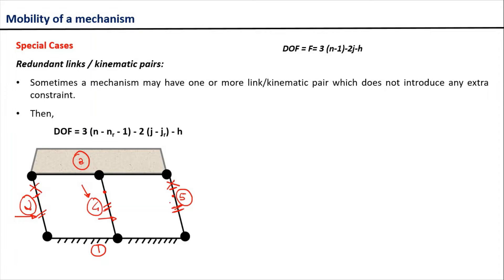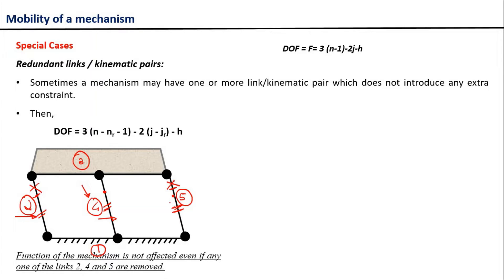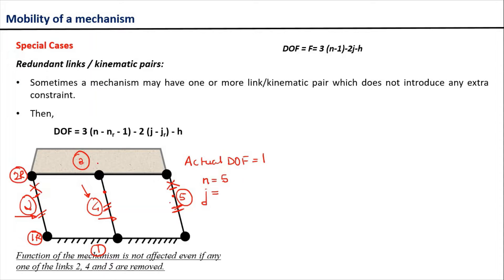Now in this case it's very obvious that the actual degree of freedom of this mechanism is equal to 1. Let us see what will be the degree of freedom when we apply the Kutzbach criteria. The total number of links in this mechanism is 5. Now let us count the number of revolute pairs: this is the 1st revolute pair, this is the 2nd revolute pair, this is the 3rd revolute pair.